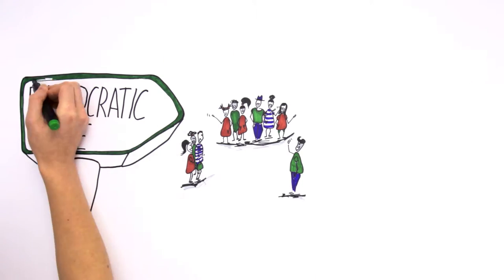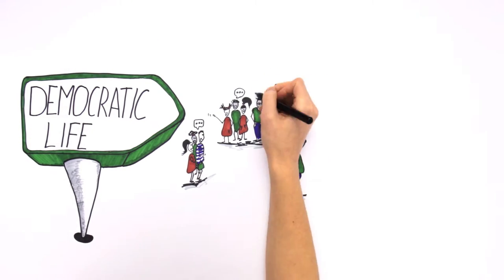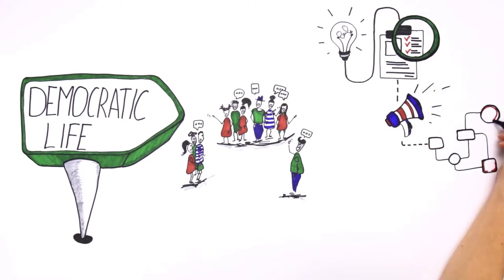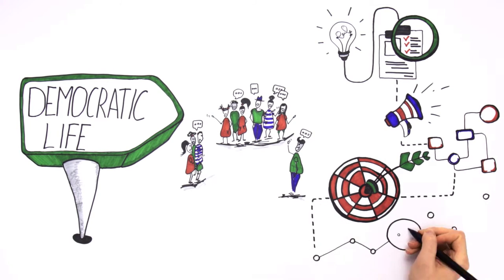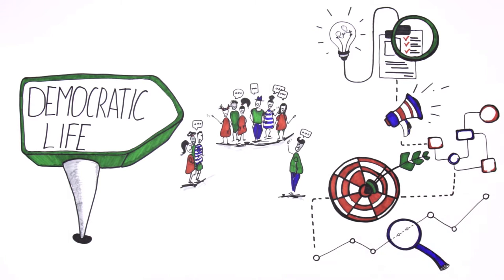Projects supported by this action normally have three phases: planning and preparation, implementation of the activities, and evaluation, which includes reflection on a possible follow-up.